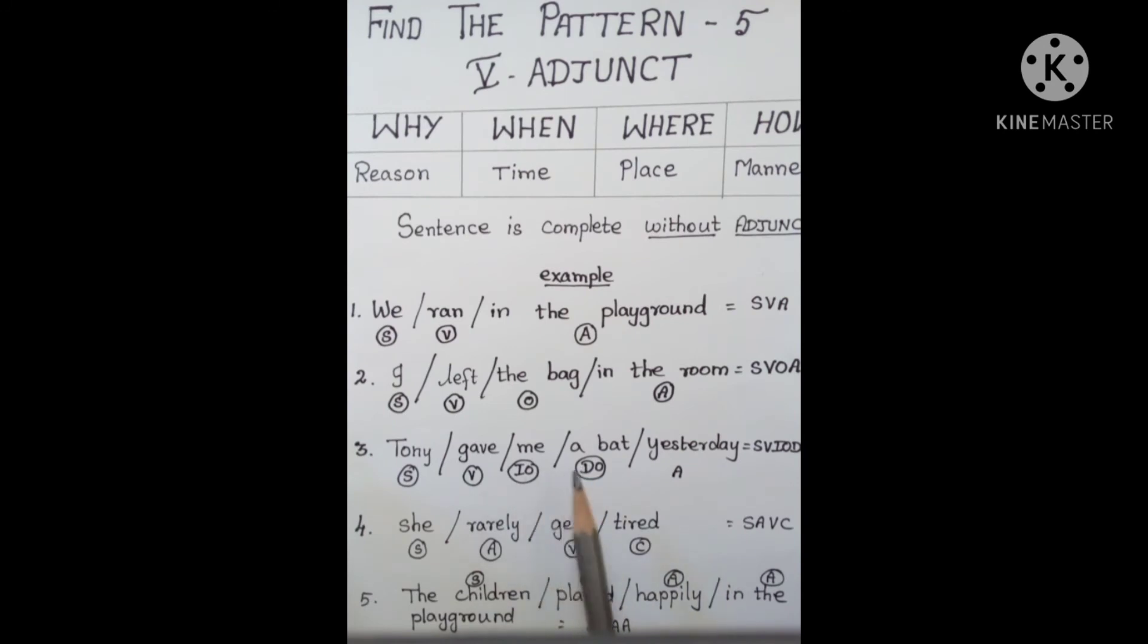If you remove yesterday, the sentence has complete meaning: Tony gave me a bat. So yesterday is the adjunct giving additional information, and the sentence is S V I O D O A.